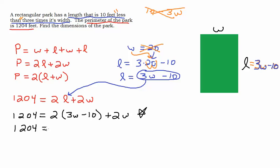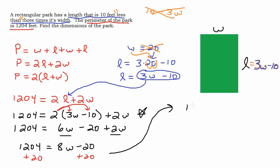Let's go ahead and solve this. We'll start by distributing the two into these parentheses. And then we'll combine like terms and do all that good stuff and isolate our variable. So on the right hand side of the equal sign, I have some like terms here. So I'll combine those together and that'll give me 8W minus 20. And then I will add 20 to both sides. I'm isolating W. Let's write this over here. And that gives me 1224 equals 8W.